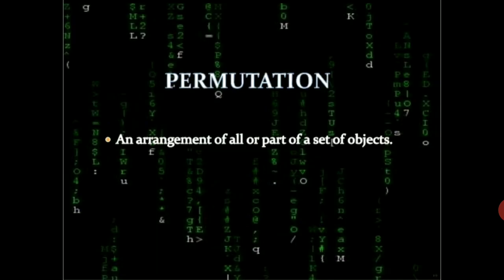Permutation is an arrangement of all or part of the elements of a set. What do you mean by set? A set is a well-defined collection of objects.